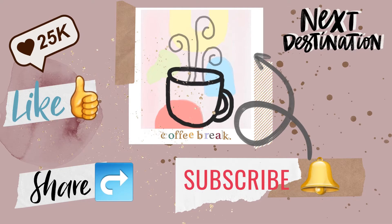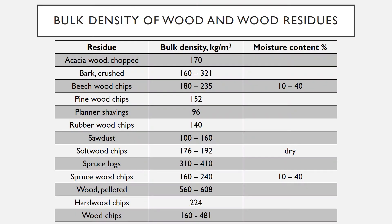Acacia wood chopped: 170 kilograms per cubic meter. Bark crushed: 160 to 321 kilograms per cubic meter. Beech wood chips: 180 to 235 kilograms per cubic meter, 10 to 40 percent moisture content. Pine wood chips: 152 kilograms per cubic meter. Planer shavings: 96 kilograms per cubic meter.